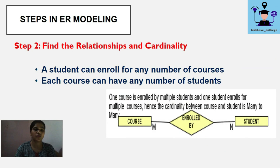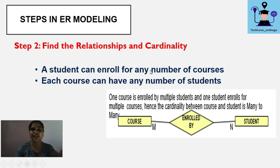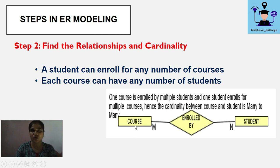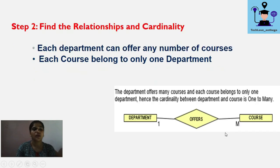The next step is to find the relationships and cardinality. First: a student can enroll for any number of courses and each course can have any number of students. The relationship between Course and Student is 'enrolled by.' One instance of a course can be enrolled in by multiple students, and one instance of a student can enroll in many courses — so the mapping cardinality is many-to-many.